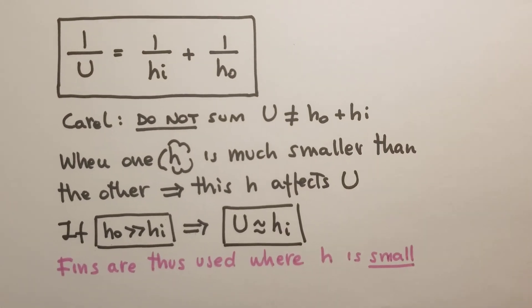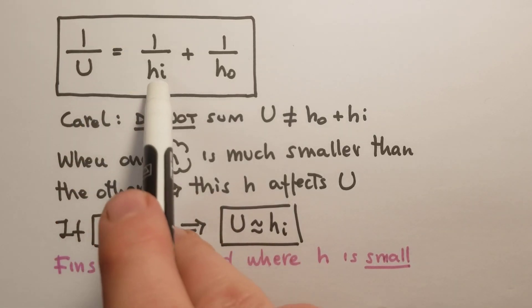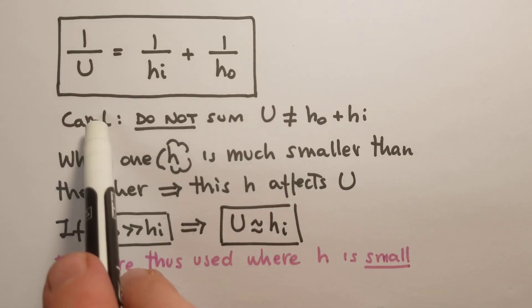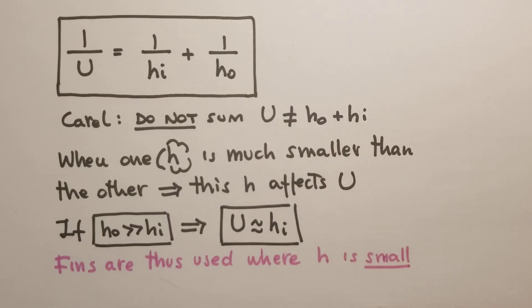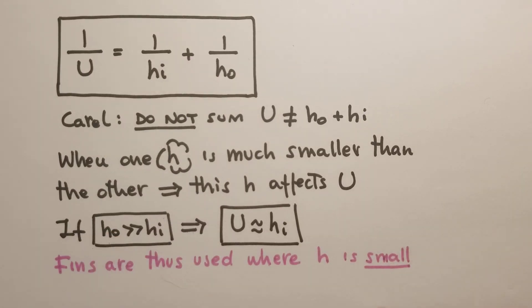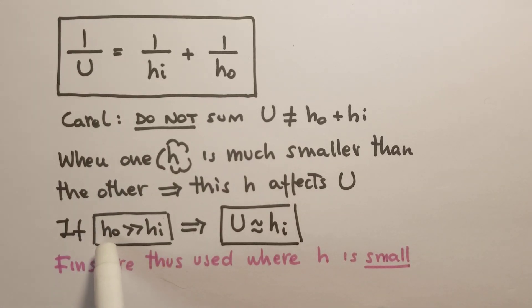The formula we've seen before, with a little algebra, allows us to find U. This is the expression: 1/U = 1/Hi + 1/H0. We have to be really careful - we cannot sum the two H's. When one of the two H's is much smaller than the other, that's the heat transfer coefficient that will impact on U. For example, if H0 is much larger than Hi, then U, the overall heat transfer coefficient, will equal Hi. This is the reason why fins are usually placed where H is small.